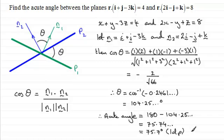So that gives you an idea then how you can go about finding the angle between two planes. Just find the angle between the two normals and then depending on what the question is, whether they want the acute angle or the obtuse angle, you can work it out.